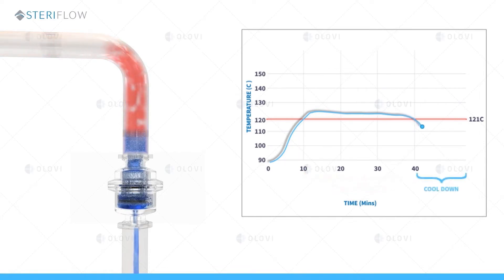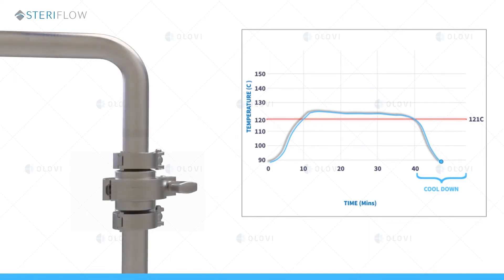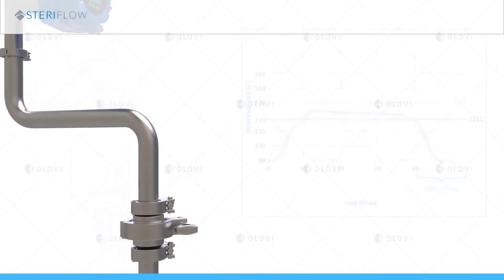After the 30 minute temperature hold period, the clean steam supply will be shut off and all condensate will drain from the piping system. Some end users will then introduce room temperature clean compressed air or nitrogen to force all traces of water from the system.